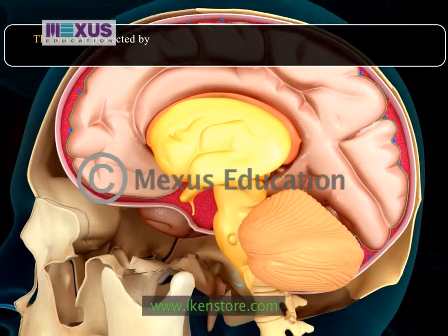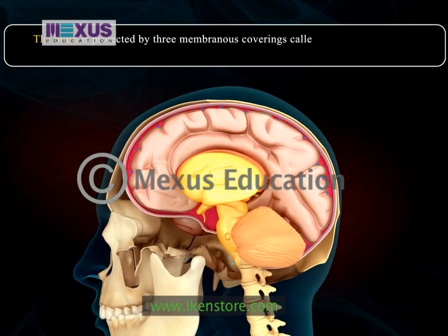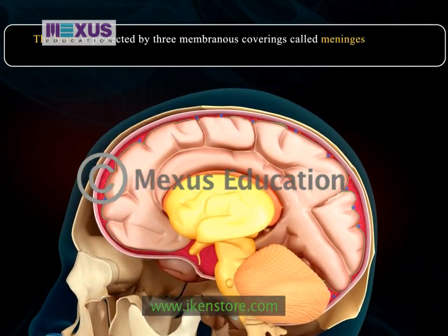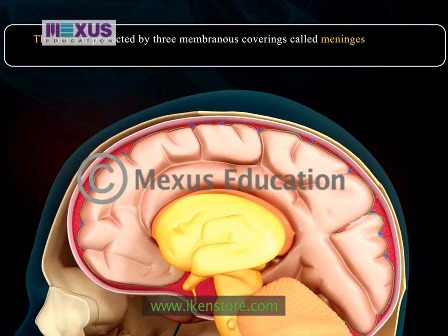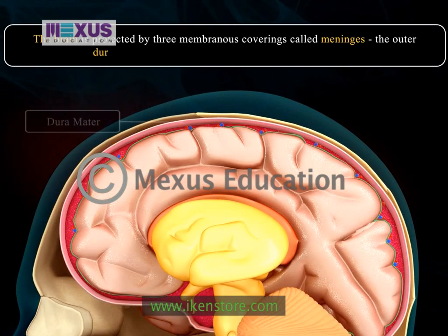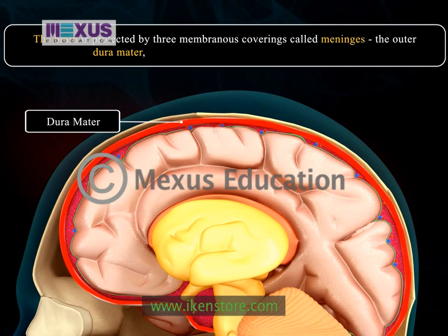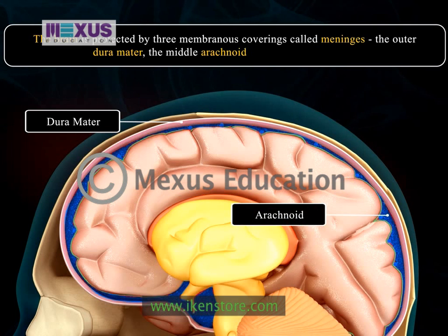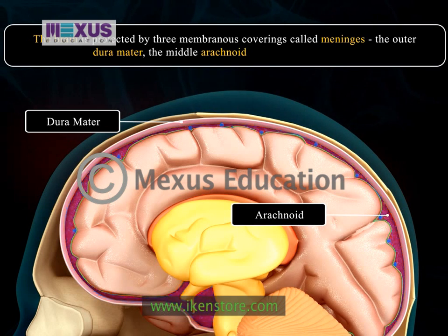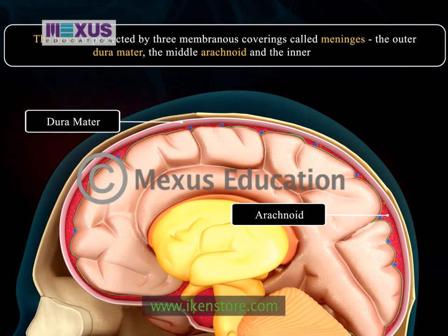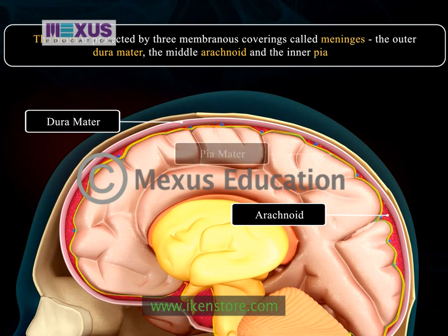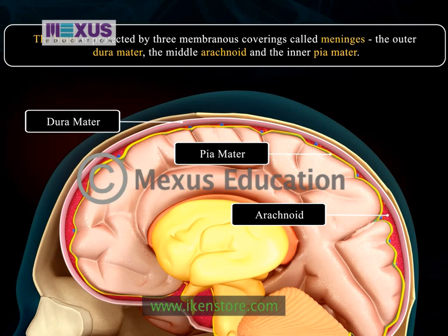The brain is protected by three membrane coverings called meninges, which also continue on the spinal cord. The outermost layer is called the duramater, which is a tough and fibrous membrane. The middle layer is the arachnoid layer, which is thin and delicate and gives a web-like cushion. The innermost layer is highly vascular and richly supplied with blood. Inflammation of the meninges causes the disorder called meningitis.